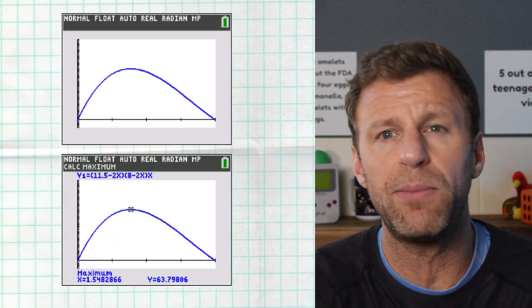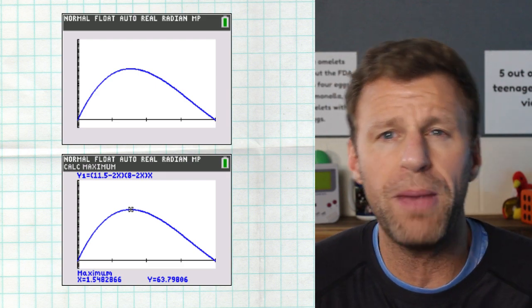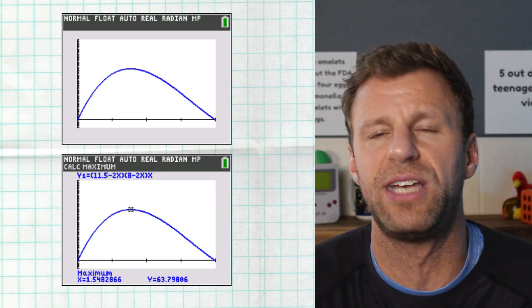Then go ahead and hit graph, and somewhere in that window, and that's what makes Desmos easier, is you'll be able to find it quicker. But if you mess around with your window a little bit, eventually you should be able to find that maximum value, and we see it right here.